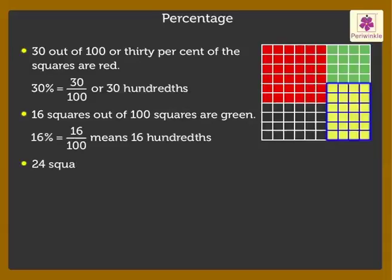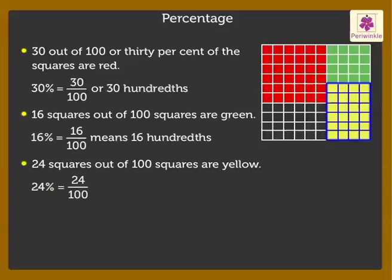24 squares out of 100 squares are yellow. It means 24% of the squares are yellow. 24% is equal to 24 upon 100, means 24 hundredths.